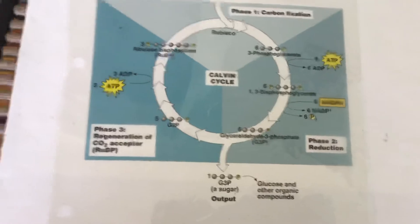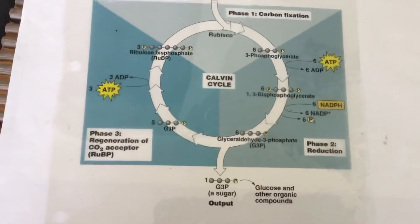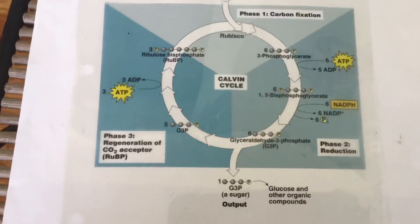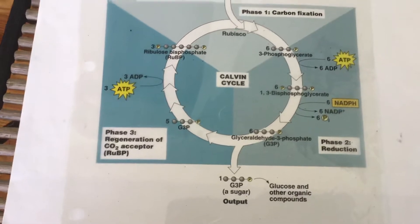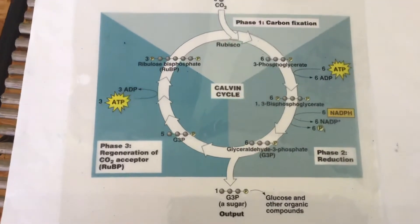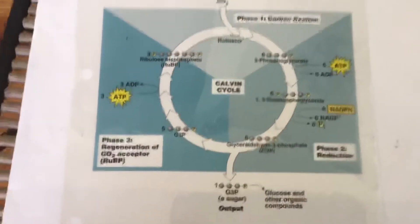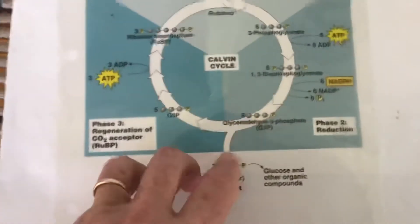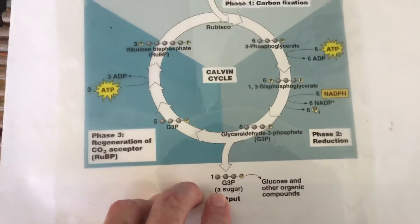Now the G3P, this three-carbon molecule, can then be taken directly off and put together with other ones and make whatever kind of sugar I want. These three-carbon pieces, two of them can be joined to make glucose, four of them could be joined to make sucrose, I could join more than that of them and make starches. So I'm going to use that G3P, this three-carbon piece, to make my sugars.